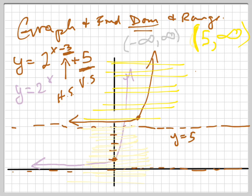So your graph, the horizontal asymptote is y equals 5. It probably would ask you that. Your domain is negative infinity to positive infinity. Your range is 5 to positive infinity.